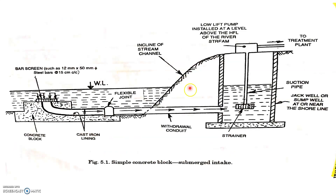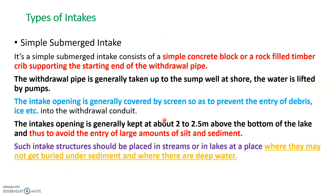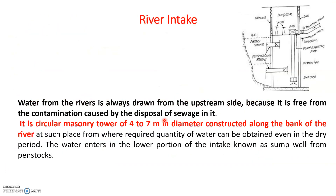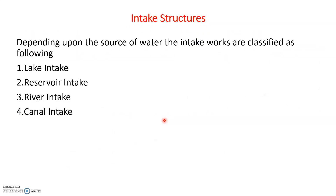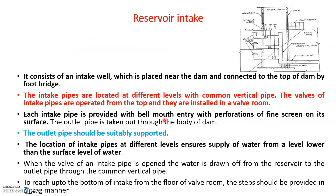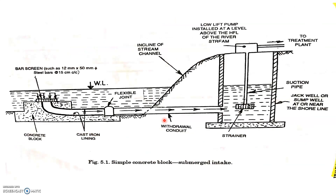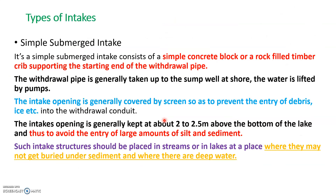This is one part of a simple submerged intake structure. Previously we have seen various types — lake intake, reservoir intake, river intake, and canal intake. This is a continuation of those intake structures. Today we are going to look at a submerged intake structure. It is a simple concrete block or rock-filled timber supported by a grub connected to the conduit — to the drawing pipe itself.